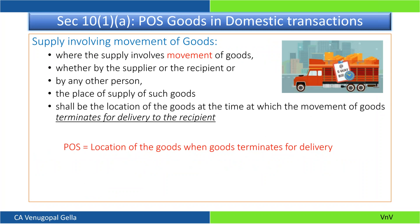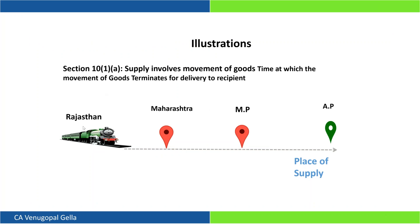Section 10 deals with place of supply for goods in case of domestic transactions. For Section 10(1)(a): whenever the supply involves movement of goods — whether caused by the supplier, recipient, or any other person — the place of supply shall be the location of the goods at the time at which the movement terminates for delivery to the recipient. For example, if you are in Rajasthan taking goods all the way to Andhra Pradesh via various states, the place of supply would be AP.